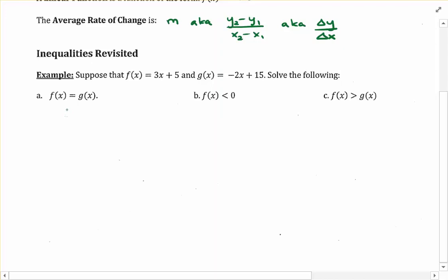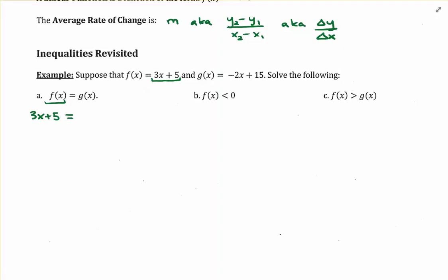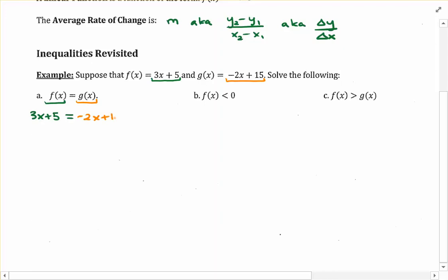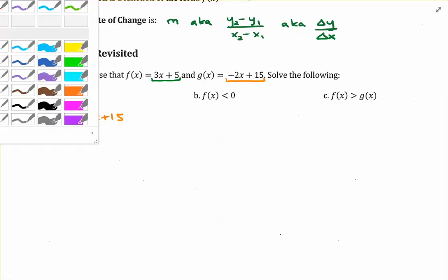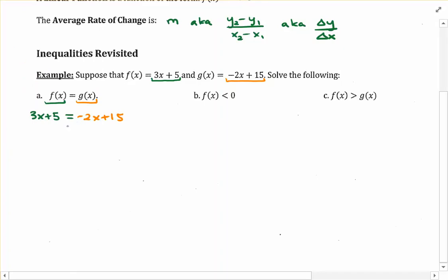Here's how you do it. You're going to replace f of x with what it's defined as — the expression 3x plus 5. So we swap out f of x for 3x plus 5, and set that equal to the expression for g of x. We basically just have a linear equation on our hands and we're going to isolate x, and that will give us our answer to part a.